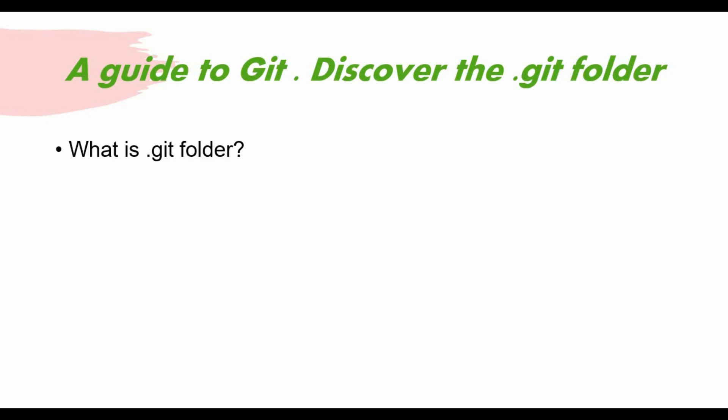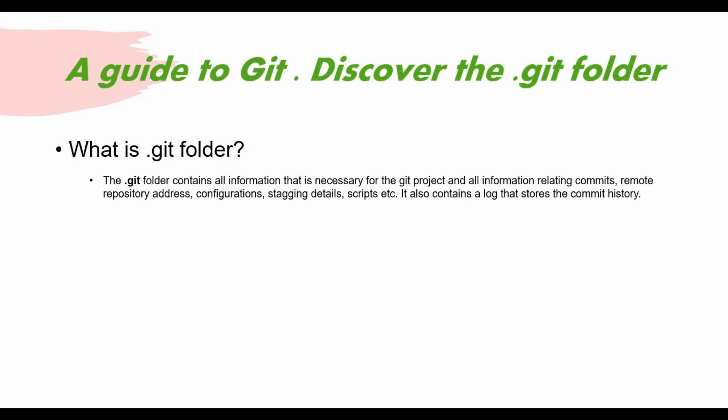So what is the .git folder? The .git folder contains all the information that is necessary for a git project. You may not see that .git folder in a normal folder structure — you have to unhide it because it's a hidden folder. But that folder has all the necessary information about your git project, relating to your commits, remote repository address, configuration, staging details, scripts, etc.